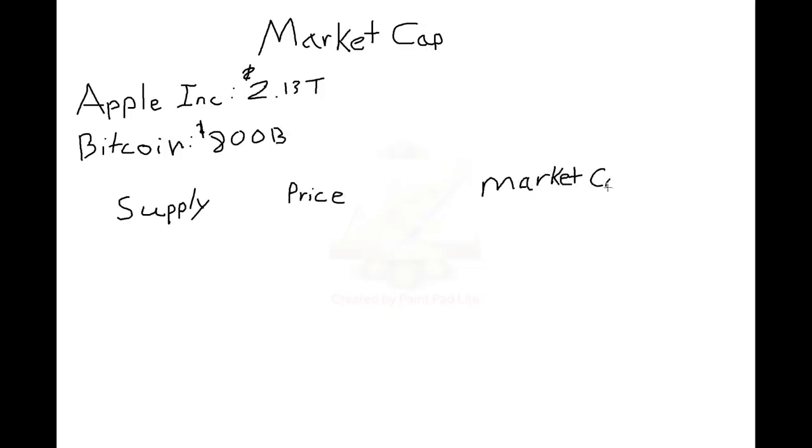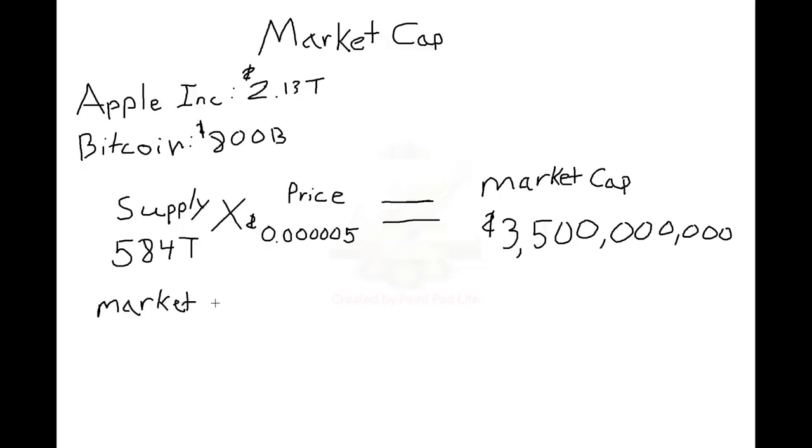Market cap is a term used to describe the valuation of something, what the entire market is worth for a particular asset. This value for cryptocurrency is calculated by multiplying the number of coins in circulation by the existing price, giving you a total value of what all SafeMoon coins would be worth collectively. There are roughly 584 trillion SafeMoon coins in circulation at the time of making this video, and the price is around 0.00005, giving us a market cap of slightly over 3.5 billion. The price of an asset is arbitrary. It does not matter. Market cap is the way to rank these currencies and assets. It accurately describes their overall value. Market cap is calculated by multiplying price times supply.